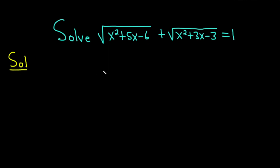The first step is going to be to isolate one of the square roots so that we can eliminate it by squaring both sides.